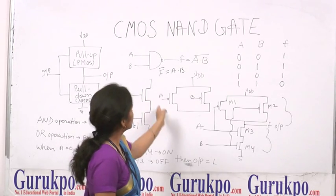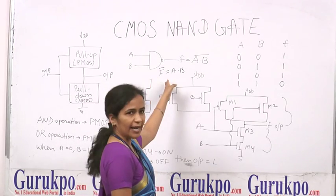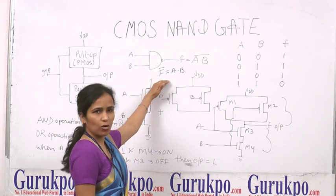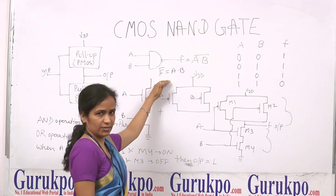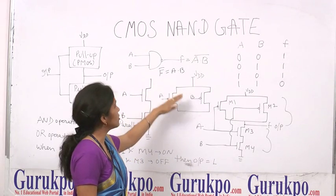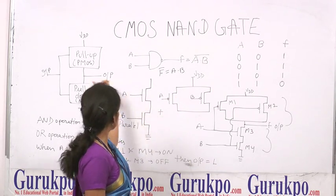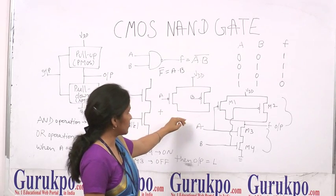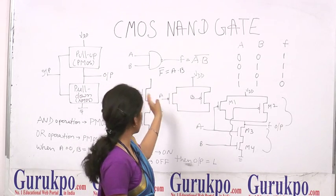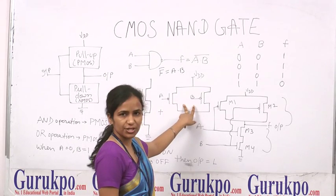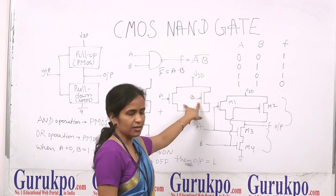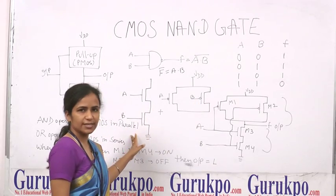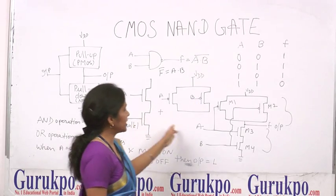So to implement the NAND gate, firstly we take the complement of the expression and construct the pull-up network, which consists of PMOS transistors connected in parallel and NMOS transistors connected in series.